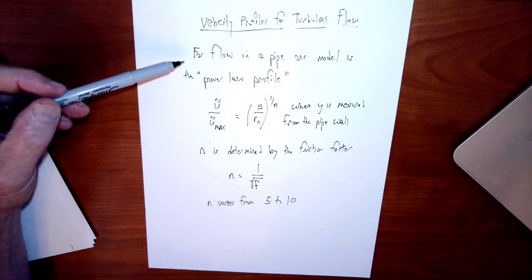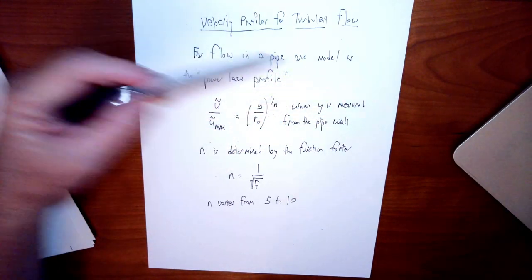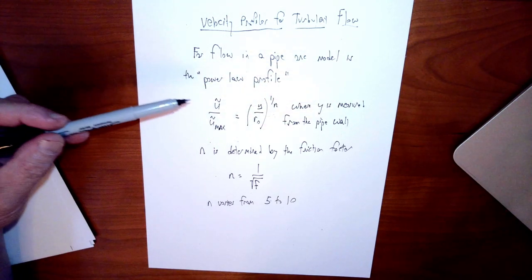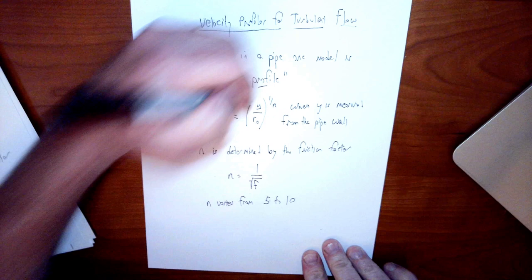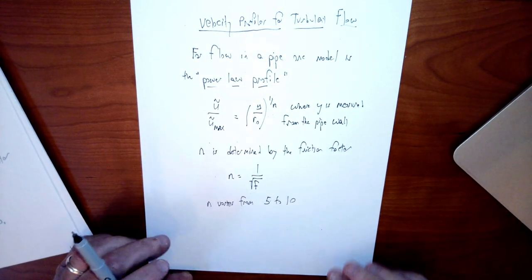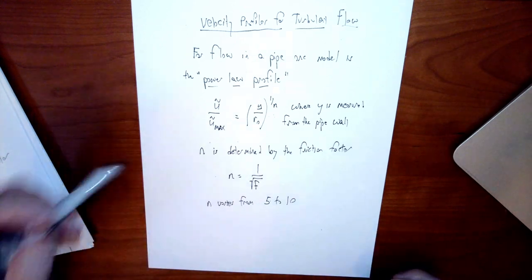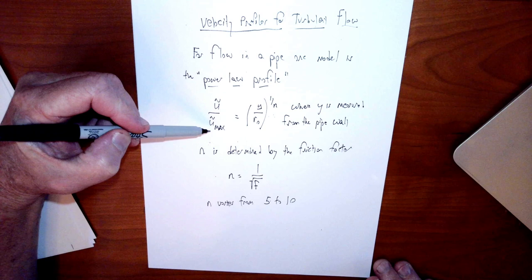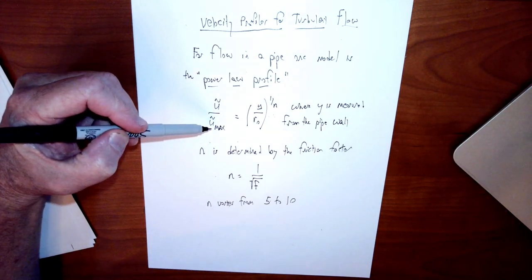There are many models for this — lots of different empirical relationships — but one model that's fairly easy to understand and works reasonably well is what's called the power law profile. The power law profile is just one of many models one can use to try to model this relationship between the time-average velocity and the time-average maximum velocity in the pipe.